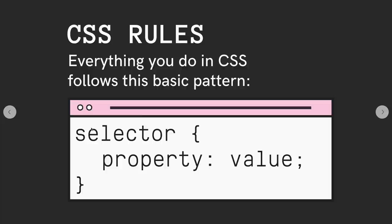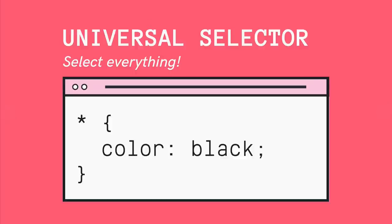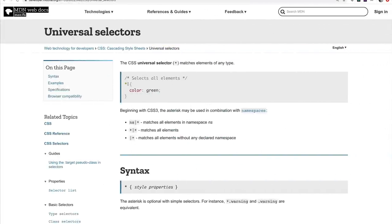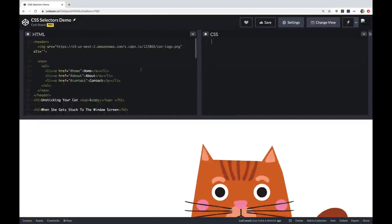We're going to start with the most general possible selector: the universal selector. This will select every element in a document — we use the star, the asterisk. It's not that common; generally you don't want to apply styles to every single thing on the page. Sometimes if you're trying to remove or reset styles you might use it, but overall it's relatively inefficient. You write star, then your properties inside the curly braces, and it matches every single element regardless of type.